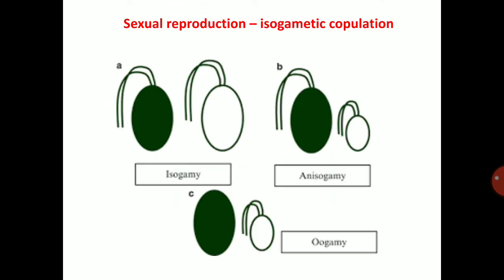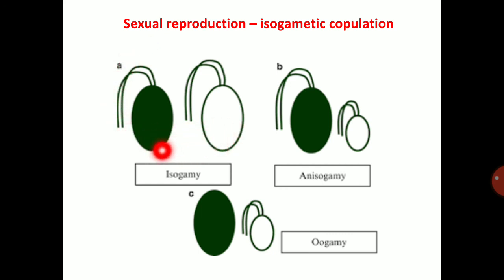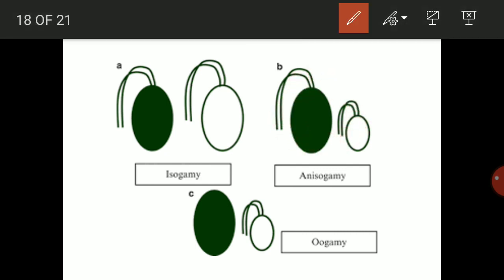There are three types of sexual reproduction: isogamy, which means fusion of identical cells or nuclei; anisogamy, which means fusion of two different nuclei; and oogamy, which means fusion of a non-motile female gamete and a motile male gamete.